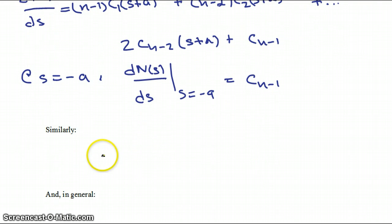Similarly, if we take our second derivative with respect to s of our numerator, of both sides, and evaluate that at s equals minus a, then we get 2 times cn minus 2.